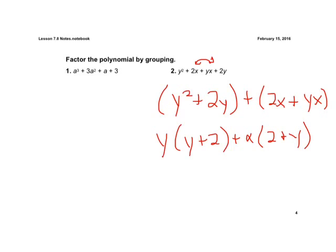Again, addition, commutative, we can switch things around. This is what we're looking for. Perfect. If we take the y plus 2 out front, we have a y plus x left over.